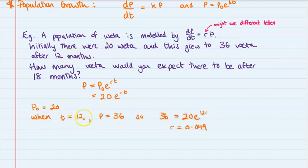so when time is 12 months, the population is 36. So we'll match up 36 is equal to 20 e to the 12 r. And you can use equation solver there, or you can go through and do it by hand. You'll work out that r is equal to 0.049.